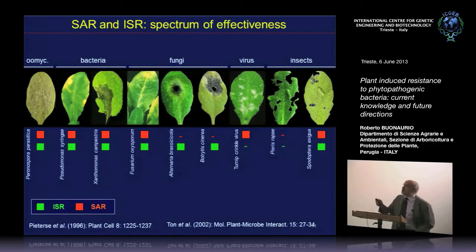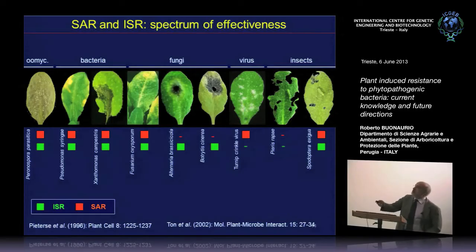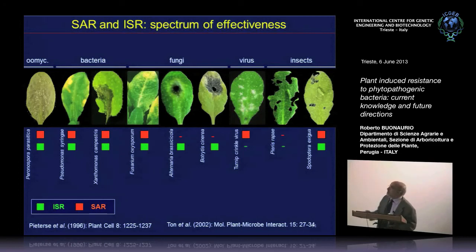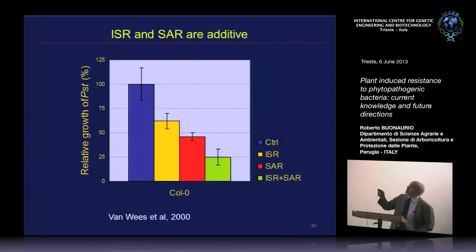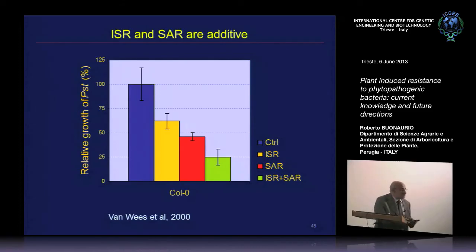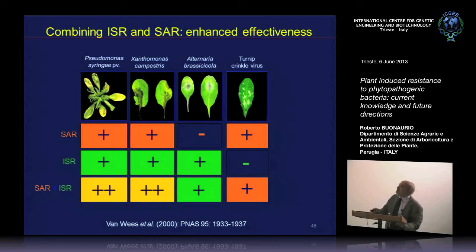The spectrum of activity shows that both SAR and ISR can control many diseases caused by oomycetes, bacteria, fungi, viruses, and insects. In some cases, only ISR is able to protect against necrotrophic fungi like Alternaria brassicicola and Botrytis cinerea. Importantly, ISR and SAR are additive — you can exploit them together by treating roots with plant growth-promoting bacteria while spraying the vegetation with a chemical inducer of resistance, so that the protection is stronger.